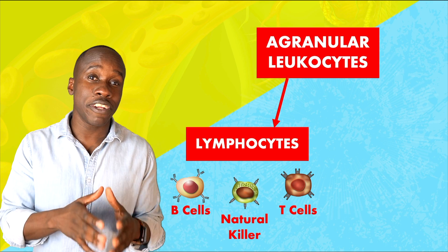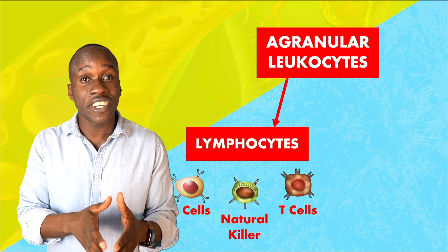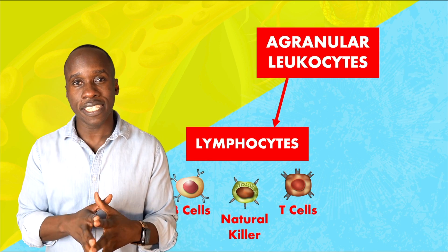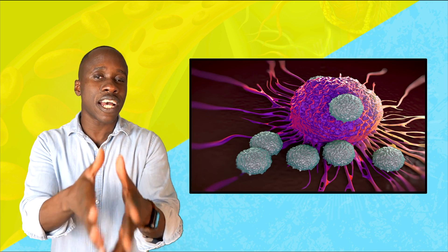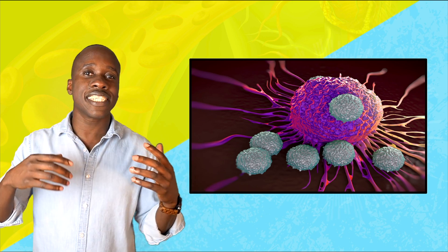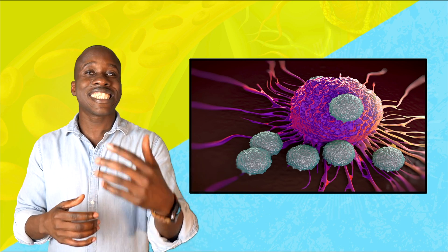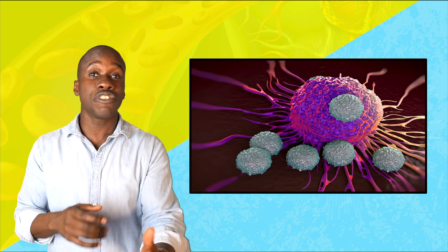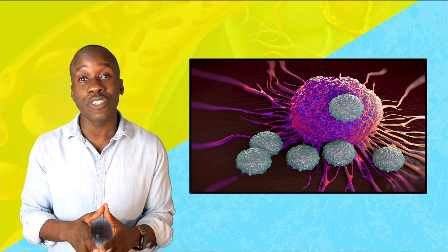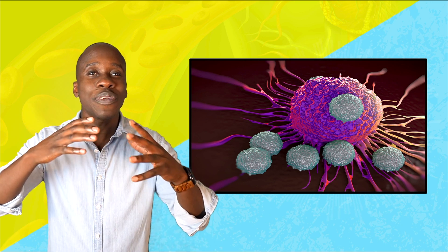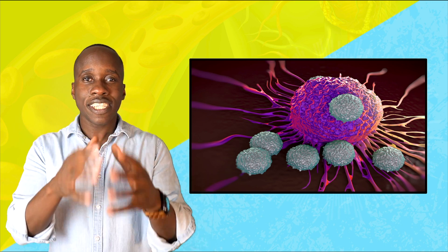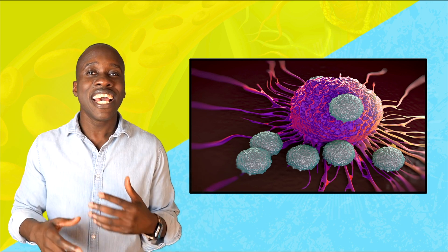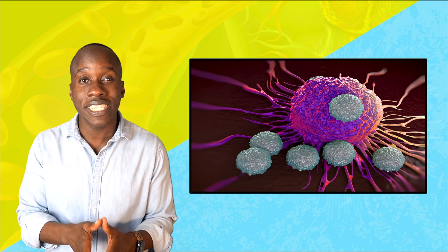For the lymphocytes, we have three main types: the natural killer, or NK cells, and the B and T cells, also called B and T lymphocytes. Here's how natural killer cells work: let's say a cell gets infected with a virus. There are cells that will display fragments of that virus on their surfaces. When natural killer cells detect those abnormal structures, they will actually kill the cells with the virus inside of them. They do this for cells infected with viruses, cancer cells, and other cells that have unusual proteins on their surfaces.